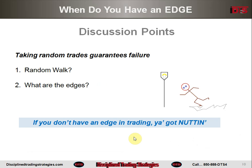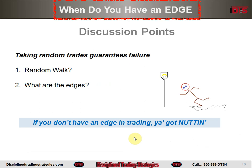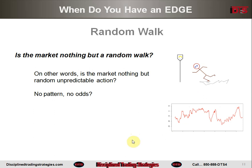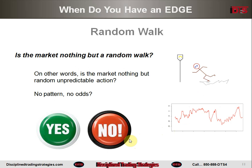Let's go on to point number two: when do you have an edge? Two discussion points: is the market a random walk, and what are the edges? If you don't have an edge in trading, you've got nothing. Is the market a random walk — is it nothing but random, unpredictable action with no pattern, no odds? My answer may surprise you: yes, it is — most of the time.